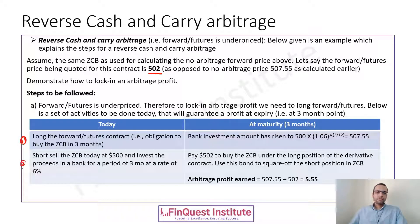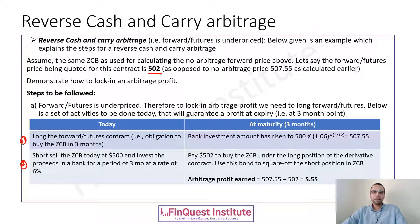At the same time, we short sell the zero coupon bond today at 500 and invest the proceeds in a bank account which will earn a rate of 6%, for a period of three months. These are the two activities which we do today.